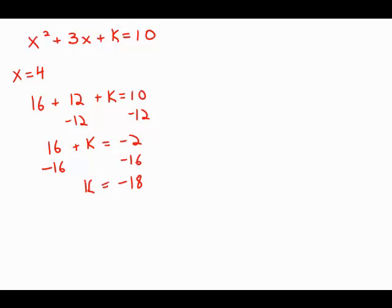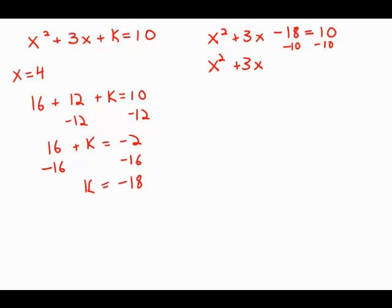I'm going to plug that back into the original quadratic: x squared plus 3x minus 18 equals 10. Now I'm going to solve this quadratic. The very first step in solving a quadratic is to get everything equal to zero: x squared plus 3x minus 28 equals zero.